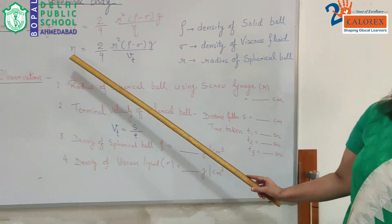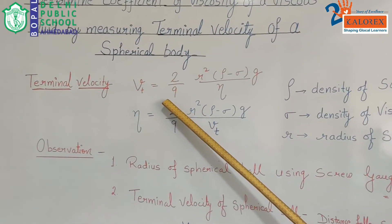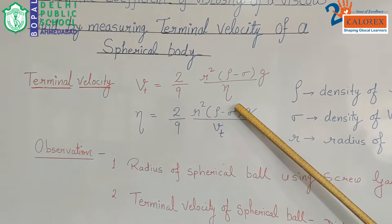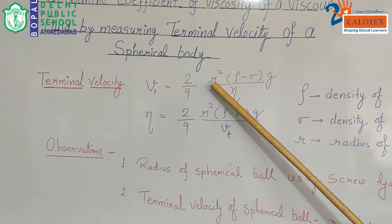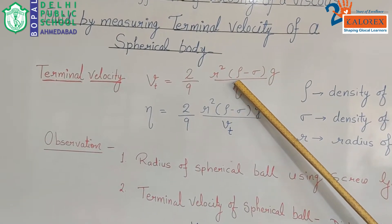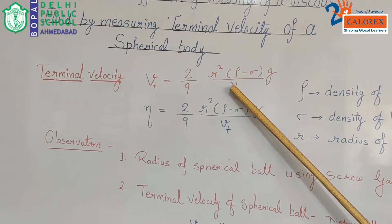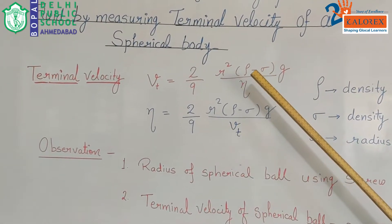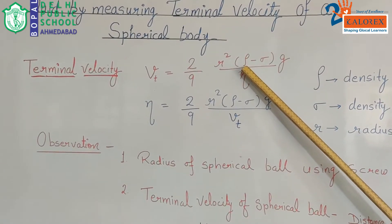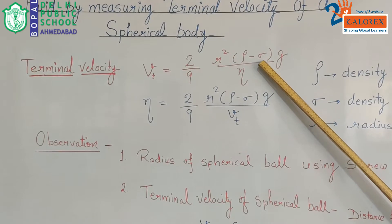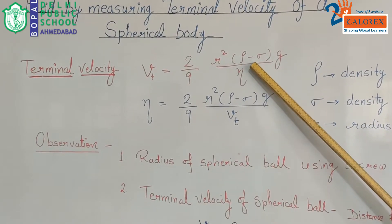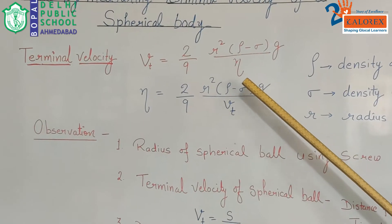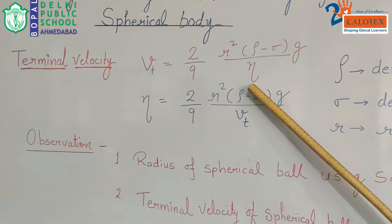The expression for terminal velocity is given by (2/9) r² (ρ − σ) g / η. Here r refers to the radius of the spherical body. ρ is the density of the solid, and σ is the density of the fluid. The solid bob we have taken is of steel, and σ is the density of the fluid, which is glycerine in our case. So for finding the value of Vt we will use the standard values of ρ and σ. η is the coefficient of viscosity of glycerine.